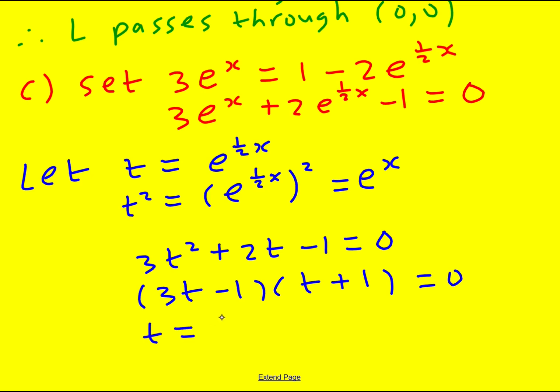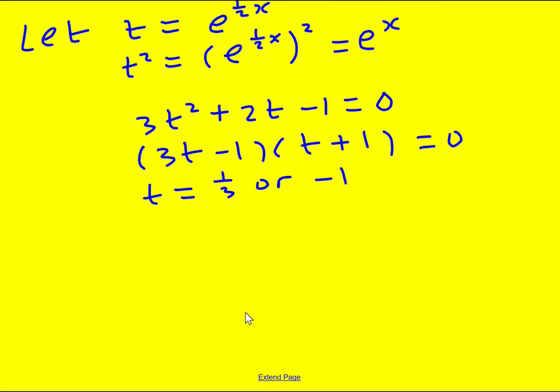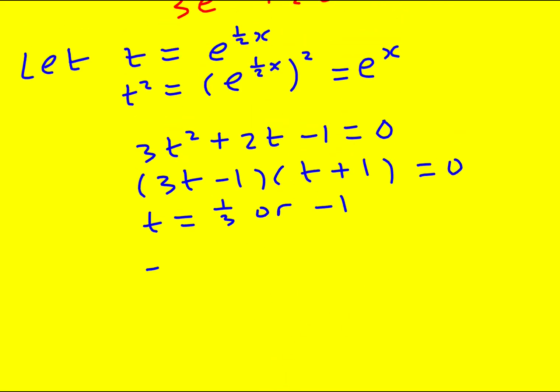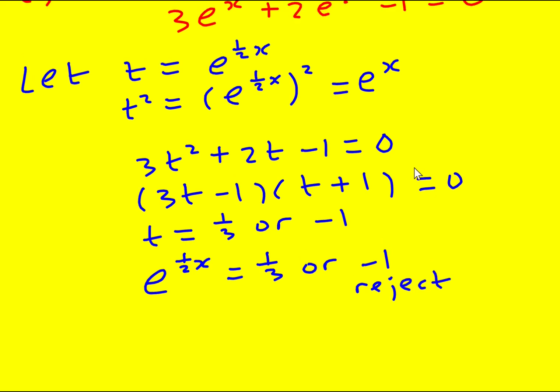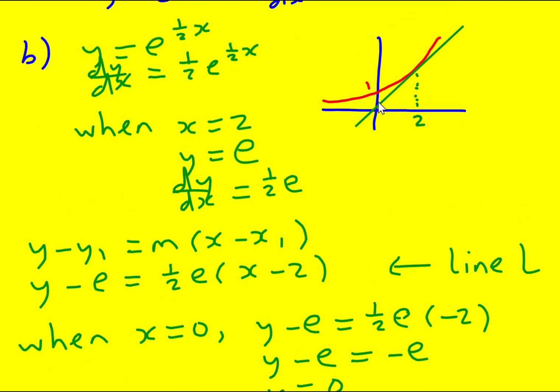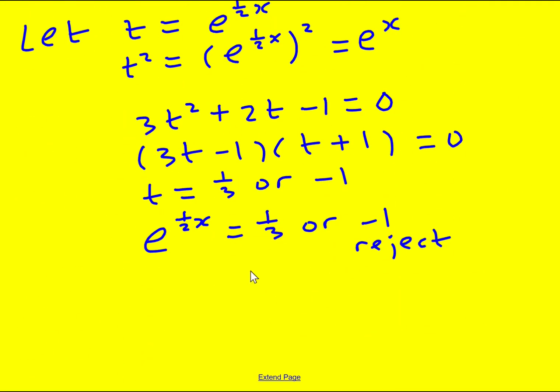Let's get that back in terms of e. So e to the half x equals a third or minus 1. But I'm going to need to reject this one, because the exponential is always positive. This one will also always be positive. So I reject that.